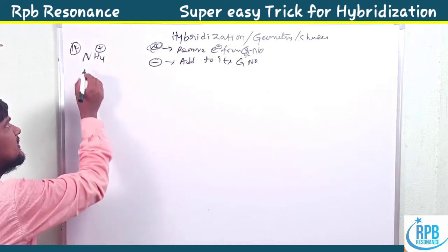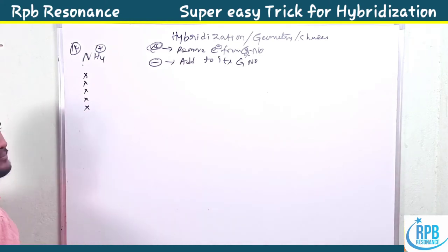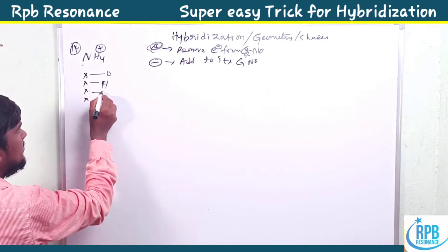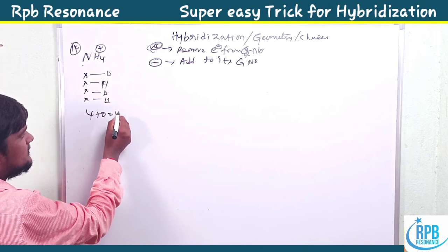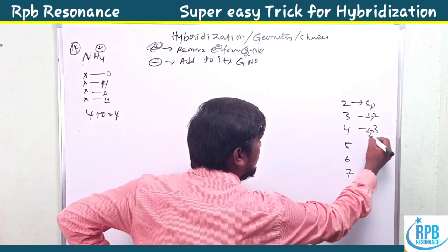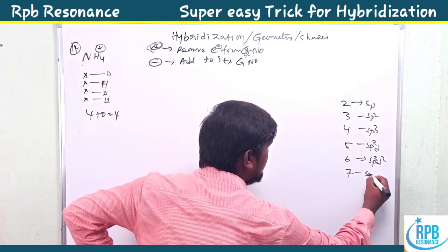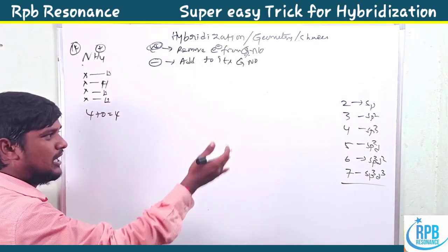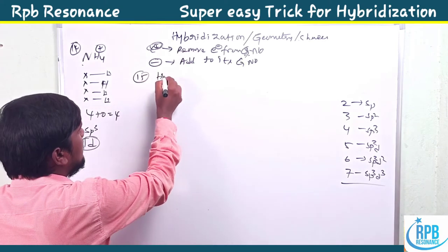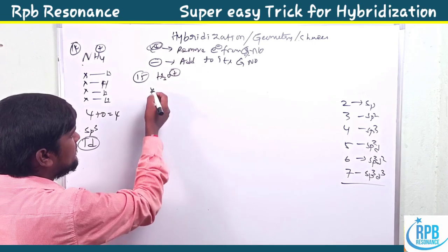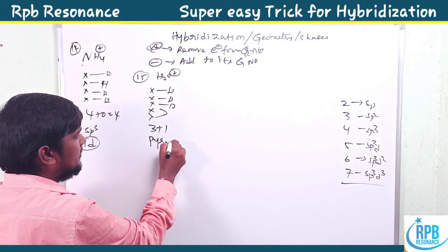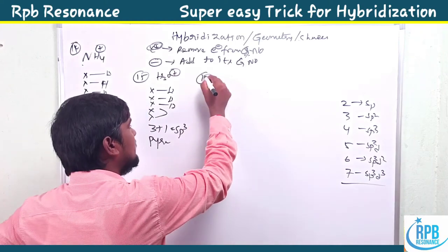For NH4+, nitrogen's group number is five. With a cation, remove one electron, giving four electrons. With four hydrogens: four plus zero equals four — sp3 hybridization, tetrahedral shape. For H3O+, oxygen's group number is six; with the cation, one electron is removed, leaving five. Three hydrogens plus one lone pair: three plus one gives sp3 hybridization, pyramidal shape.